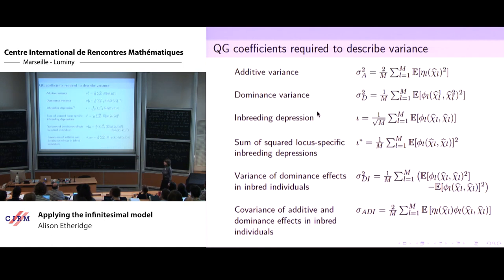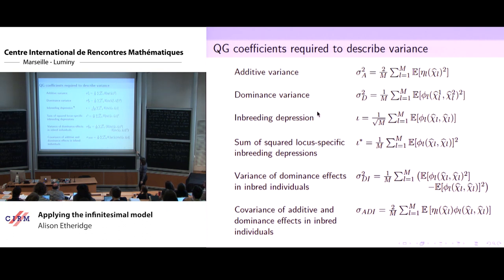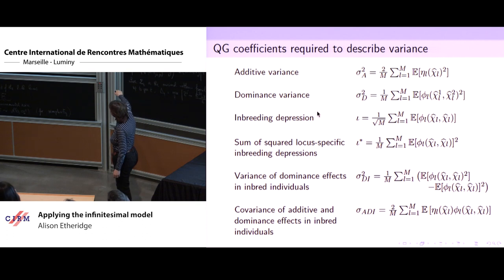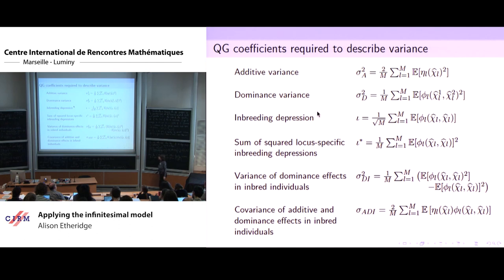Having expressed all those identities, we find an expression for the variance which includes these quantities — six of them. We have the additive variance, the dominance variance, and then the weird bits and pieces: sigma_AD, the covariance of additive and dominance effects in inbred individuals. All of these enter into our expressions for the variance of the shared component in families.